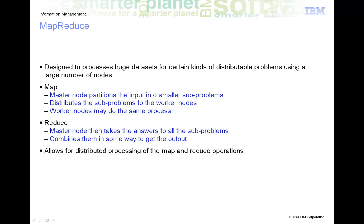MapReduce is a way to process large data sets by distributing the work across a large number of nodes. Prior to executing the mapper function, the master node partitions the input into smaller sub-problems, which are then distributed to the worker nodes.